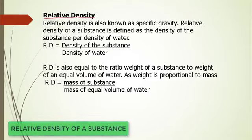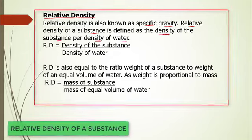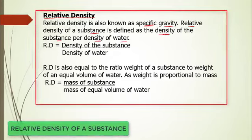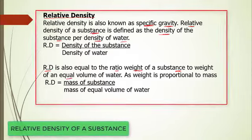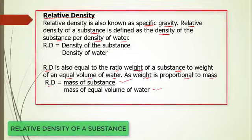When we talk about relative density, we are talking about specific gravity — that is another name for it. The relative density of a substance is defined as the density of the substance divided by the density of water. Relative density is also equal to the ratio of the weight of a substance to the weight of an equal volume of water, since weight is proportional to mass.